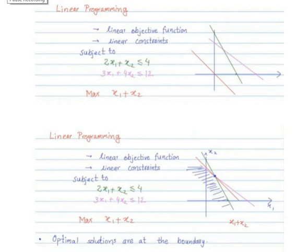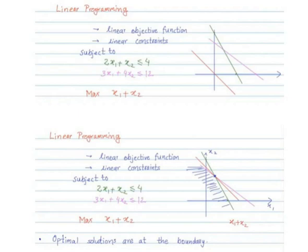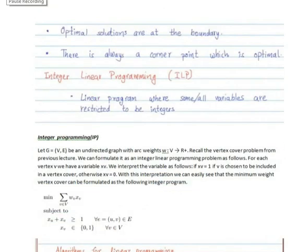Suppose we want to maximize the objective function x1 plus x2. Consider the red line passing through the origin showing x1 plus x2 equal to 0. As you move it up, we get higher values of x1 plus x2. We know that optimal solutions are always at the boundary, and since the optimization function is linear, there is always a corner point which is optimal.